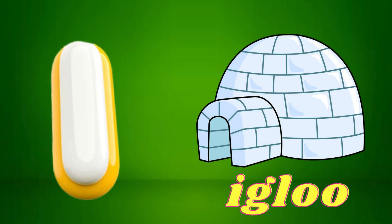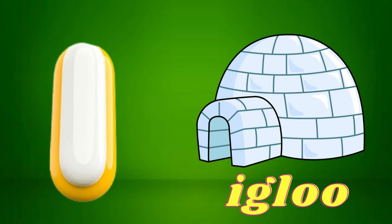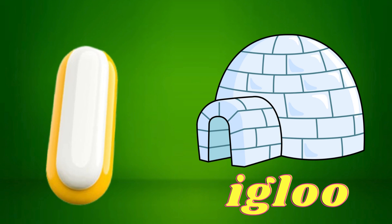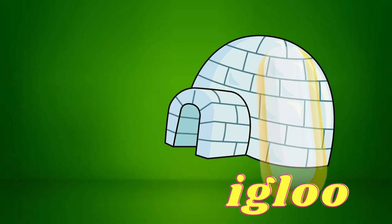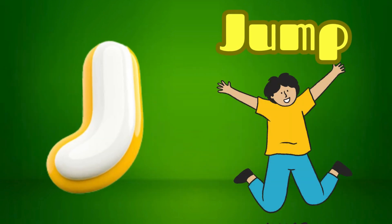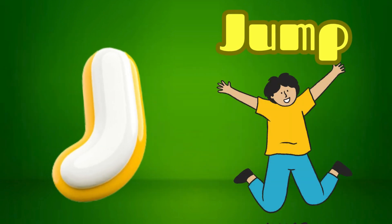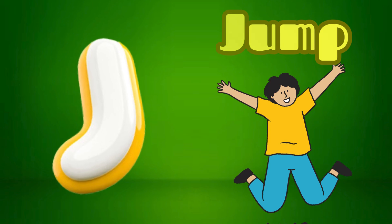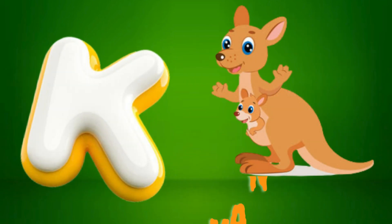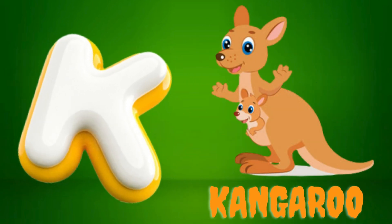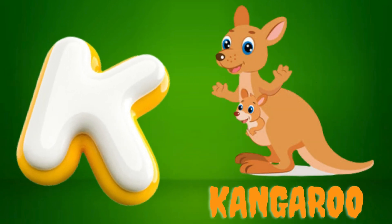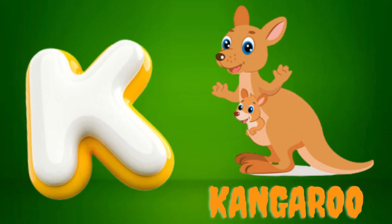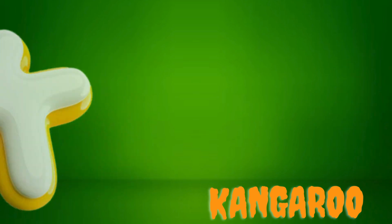I is for Igloo, I-I-Igloo. J is for Jump, J-J-Jump. K is for Kangaroo, K-K-Kangaroo.